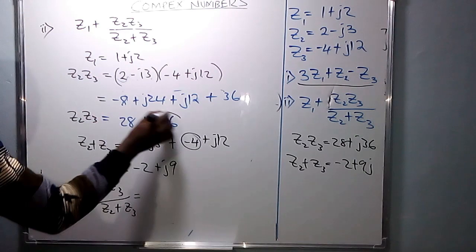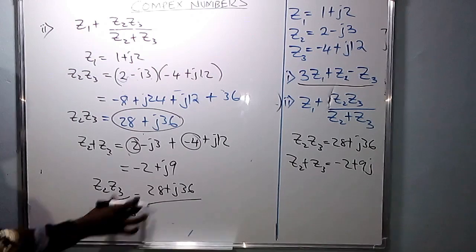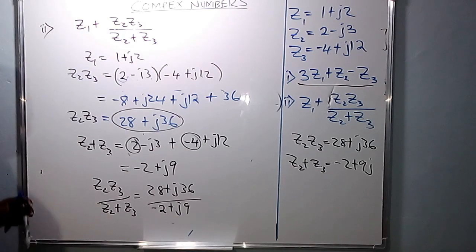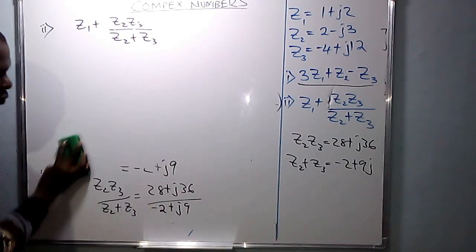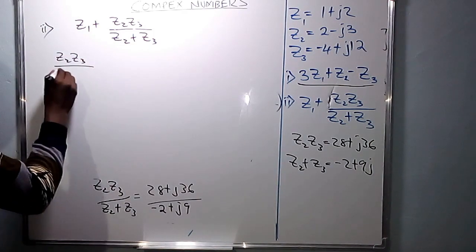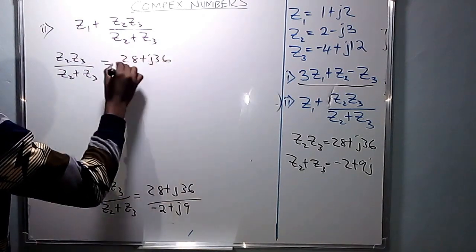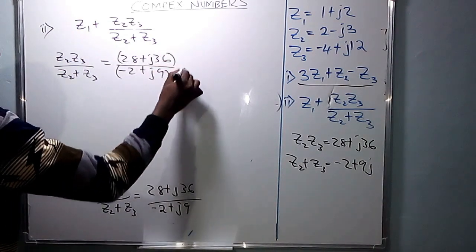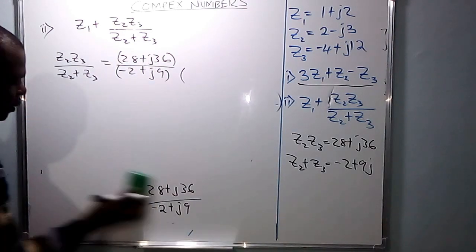Now join the numerator with the denominator. Z2·Z3 over Z2 plus Z3 is 28 plus j36 all over negative 2 plus j9. To write this in the form A plus Bj, we need to get rid of the imaginary part in the denominator by multiplying by its conjugate.